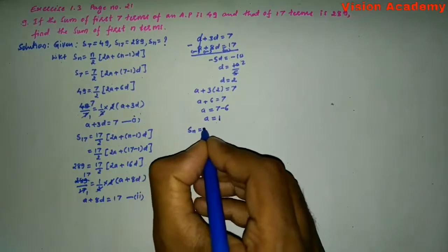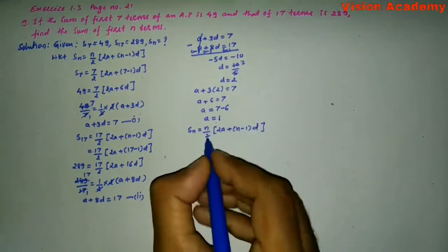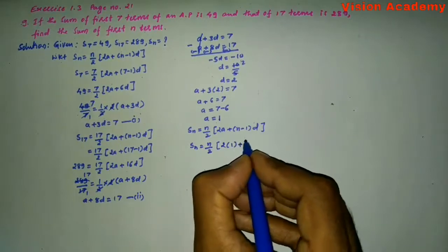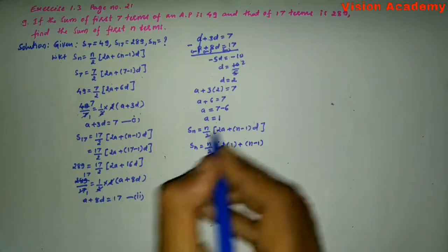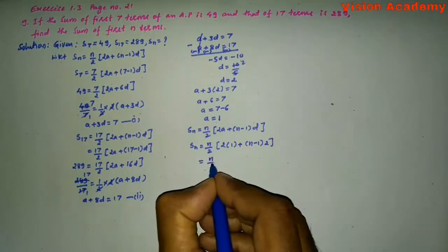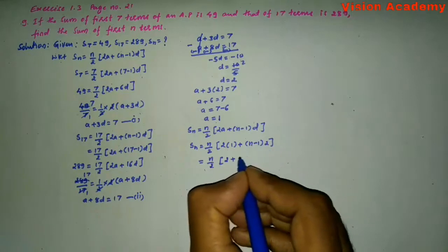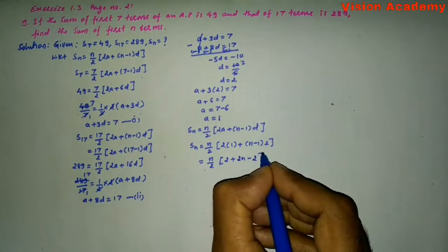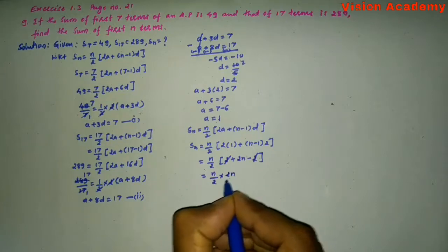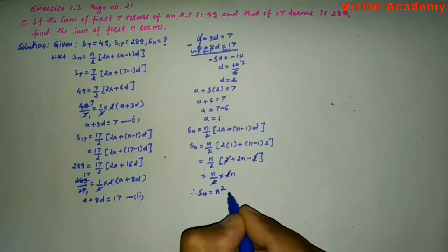We know that Sn is equal to n by 2 into 2a plus n minus 1 into d. Substituting a = 1 and d = 2: Sn equals n divided by 2 into 2 times 1 plus n minus 1 times 2, which is n divided by 2 into 2 plus 2n minus 2. The plus 2 and minus 2 cancel, leaving n by 2 into 2n. The 2s cancel, so therefore Sn is equal to n squared.